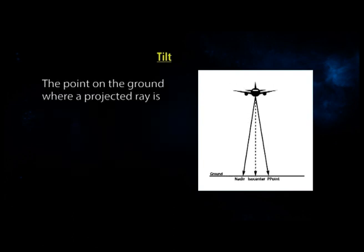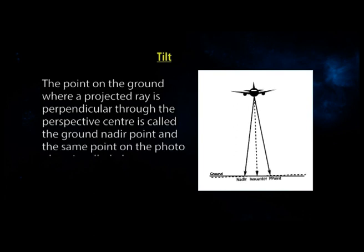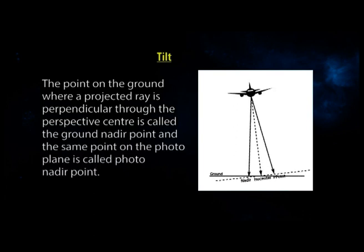The point on the ground where a projected ray is perpendicular through the perspective center is called the ground nadir point, and the same point on the photo plane is called the photo nadir point. The point at which the projected ray from ground to perspective center passes through the photo plane at right angle is called the principal point. Tilt occurs due to unstable atmospheric conditions, human error of the pilot, or imperfections in the camera mounting.